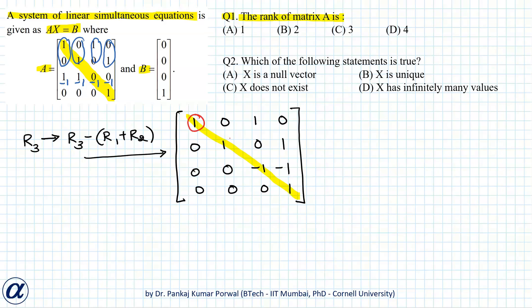I have 1, 2, 3, and 4 pivot elements, so rank of matrix A is 4. Our option D is correct.